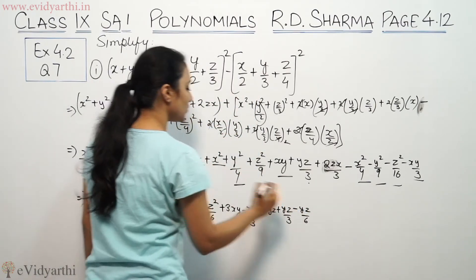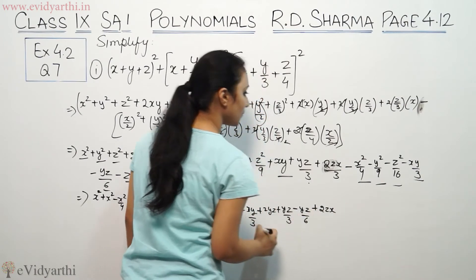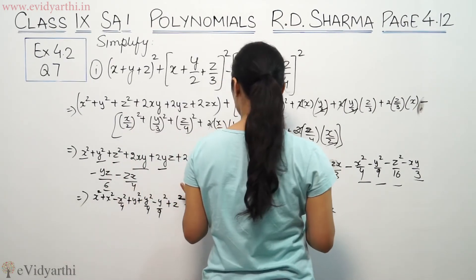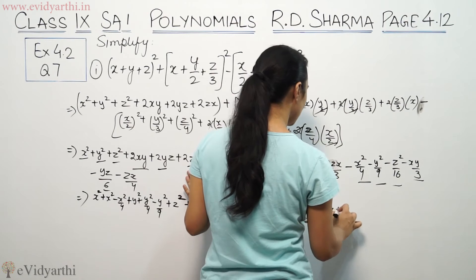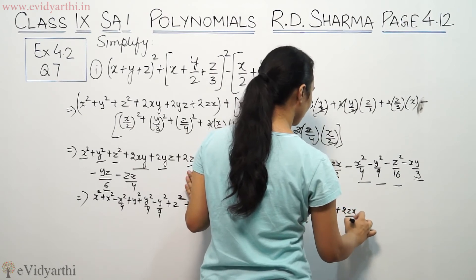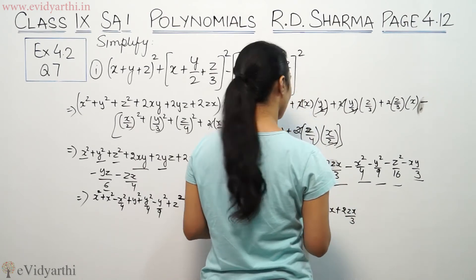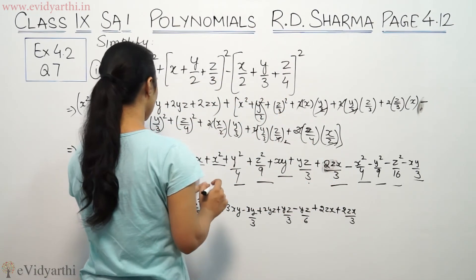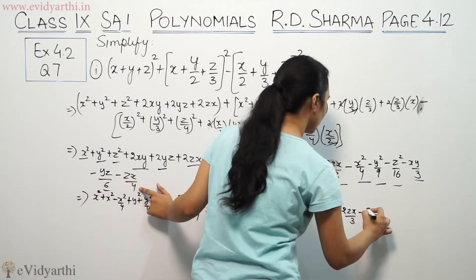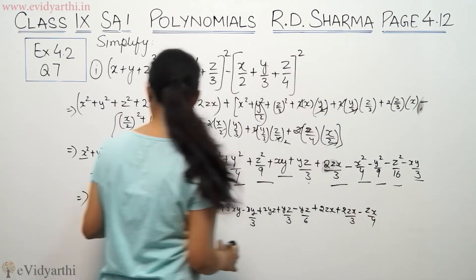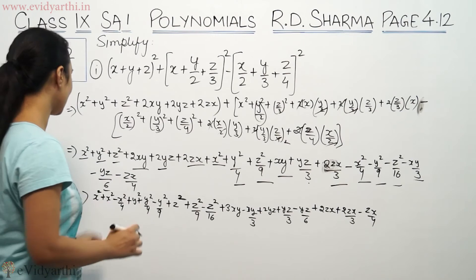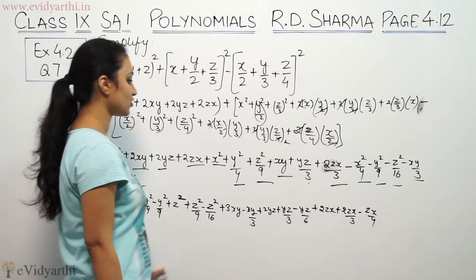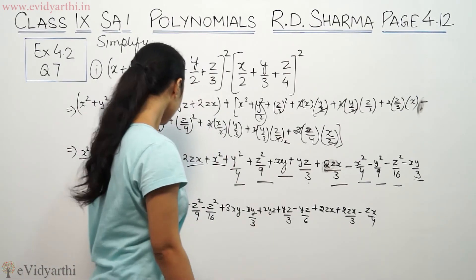For zx: 2zx+2zx/3-zx/4. Now we'll simplify by finding common denominators.